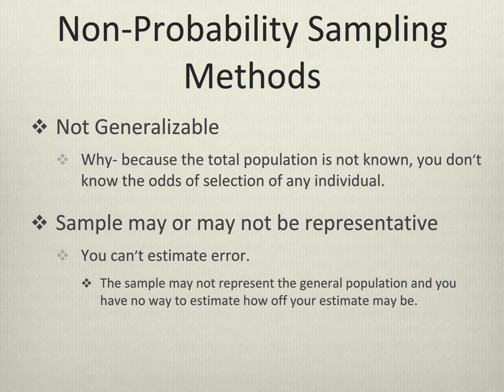Our sample may or may not be representative. We can't estimate error. We can't draw a graph showing the area in which we expect the true population parameter to fall.